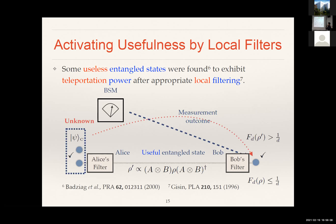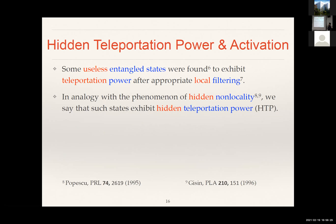What this really means is that you can take this state that survives the filtering operations into the usual teleportation protocol, perform the experiments, and find that the average teleportation fidelity goes above the classical threshold. Following the terminology in the literature, we refer to this phenomenon as quantum states having hidden teleportation power — the teleportation power can be activated, meaning that initially the fidelity is below the threshold, but after local filtering and conditioning on successful filtering, you end up with a quantum state that actually beats the classical threshold.